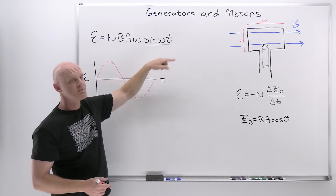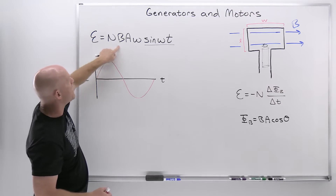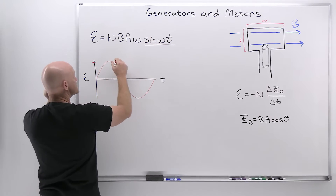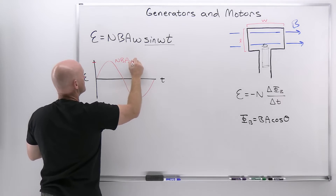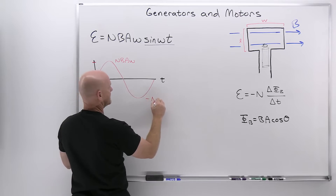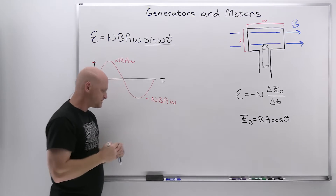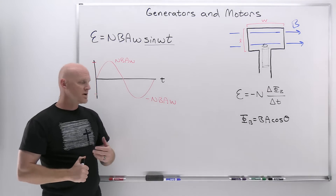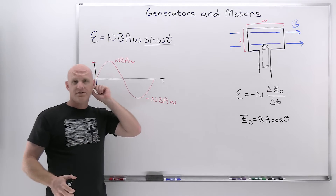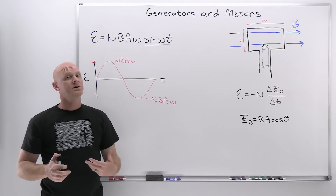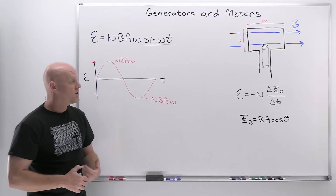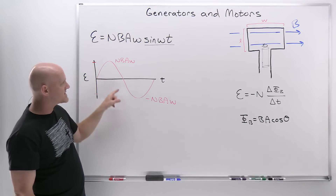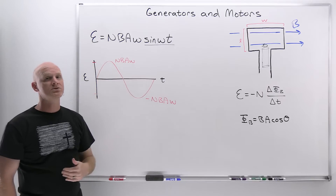The sine function has a maximum of one and a minimum of negative one. So the function is going to have a maximum of NBAω times one — that's NBAω — and then a minimum of negative NBAω. This is the basis for what we call alternating current, or AC circuits. Anything you plug into your wall is operating on alternating current. You might have to convert it to direct current if you're powering a laptop or something where the current is fairly steady, but the electricity coming out of the wall itself is alternating current.